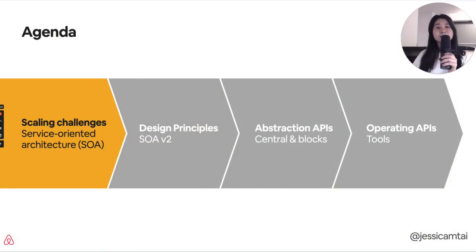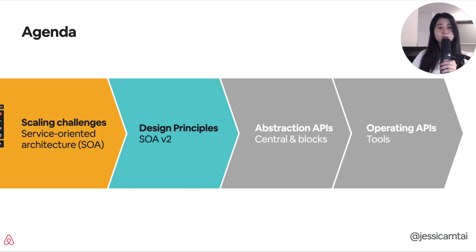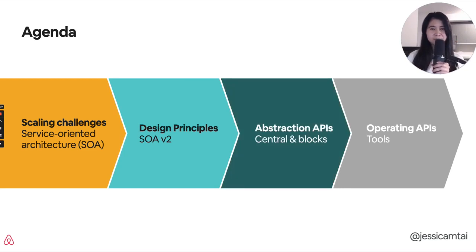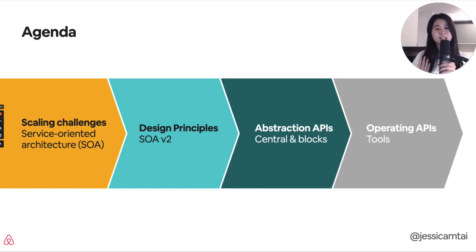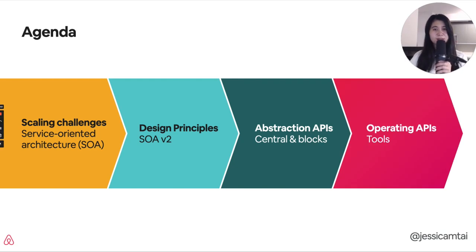I'll open by describing some of the scaling challenges that we were facing with Service-Oriented Architecture. I'll then move into some of the design principles we created to help us with our second iteration of SOA. I'll dive into some of the technical details of our abstraction APIs, focused on the data aggregator as well as service blocks. And then I'll discuss some of the ways that we operate our APIs and the tools we use to build and maintain these new API patterns.